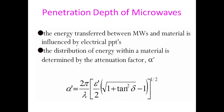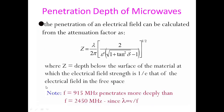Penetration depth of microwaves can be determined using the attenuation factor α', calculated as: α' = (2π/λ) × √[(ε'/2) × (√(1 + tan²δ) − 1)]. The penetration depth z equals 1/(2α'). This is the depth at which the electrical field strength falls to 1/e of its value in free space, derived from Lambert's law.